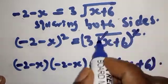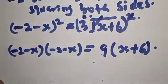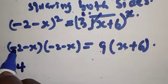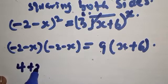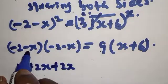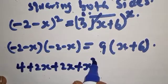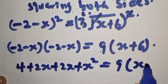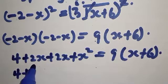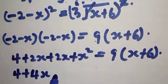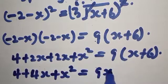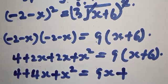Squaring both sides: (minus 2 minus X) squared equals 9 times (X plus 6). Expanding the left side: minus 2 times minus 2 is 4; minus 2 times X is minus 2X; minus X times minus 2 is plus 2X; and minus X times minus X is plus X squared. So the left side gives: 4 plus 4X plus X squared, equal to 9X plus 54.